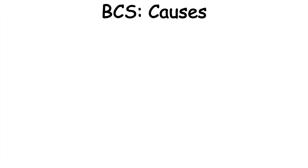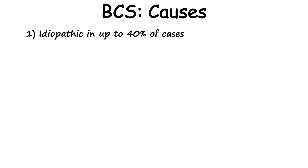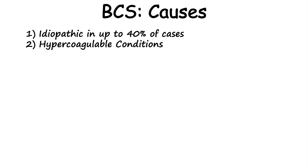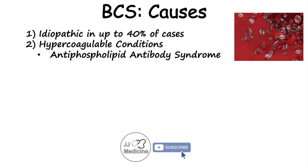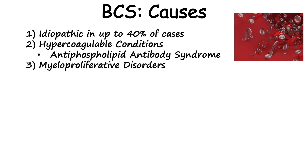Cases of Budd-Chiari syndrome may be idiopathic — no known cause — in up to 40% of cases. Often it is due to clots, so hypercoagulable conditions are major risk factors. These include antiphospholipid antibody syndrome, factor V Leiden, protein C deficiency, protein S deficiency, and paroxysmal nocturnal hemoglobinuria. Myeloproliferative disorders such as polycythemia vera can also increase the risk.